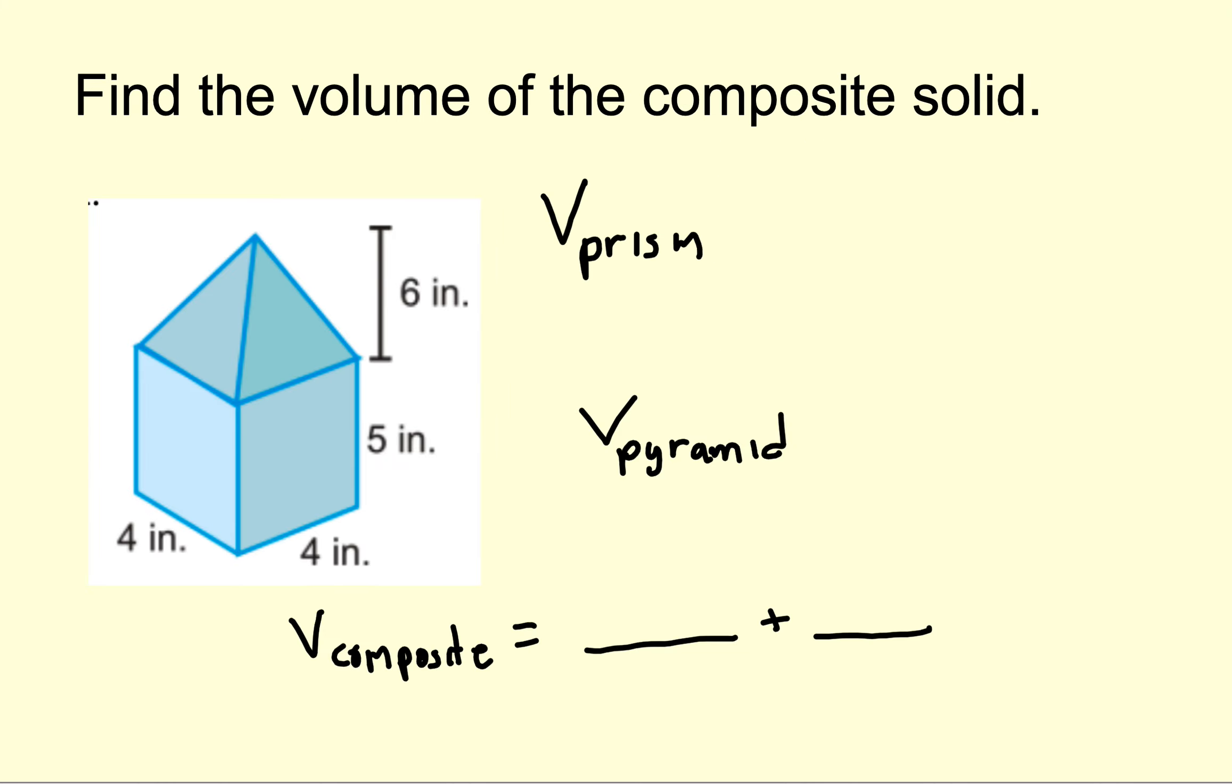Our last problem is the volume of the composite solid. This is two figures, a prism and a pyramid. Now the prism has a square base here. It's 4 by 4. So remember the formula is area of the base times the height. And that is going to be a 16. And the height right here of the prism is 5. So this answer is 80.